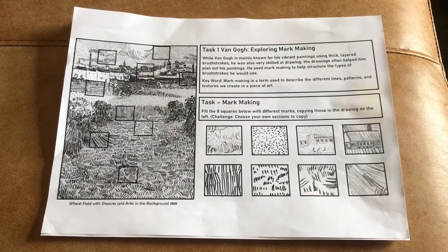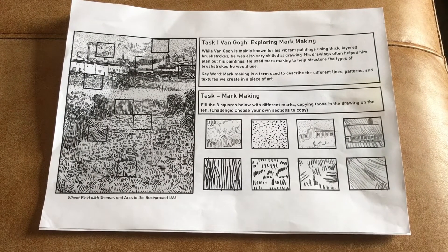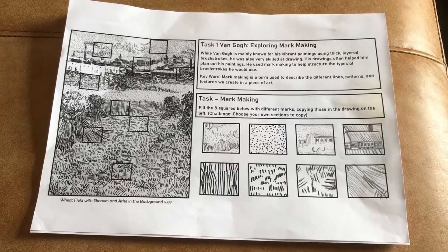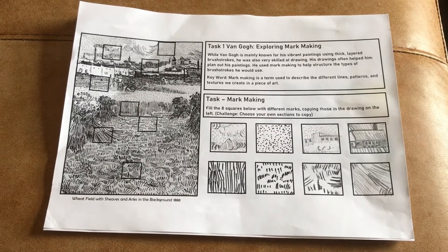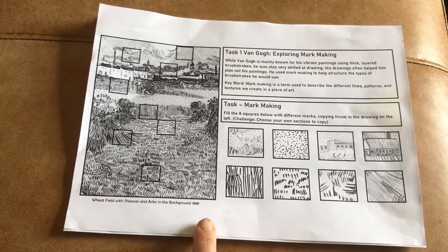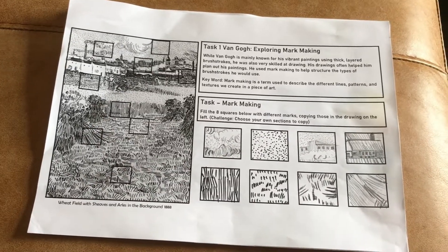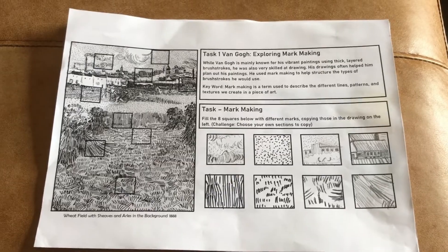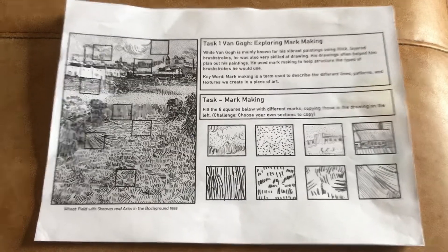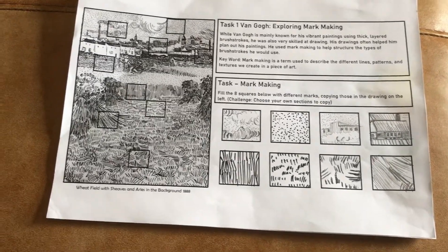So I'm going to set you some mark making tasks this week and I'm going to show you my attempt at the examples now. Task one: I would like you to explore mark making using pencil, a biro, or felt tip, something like that. You can see here that the suggestion is you use these small squares and recreate them in these squares over here. You can choose your own sections if you want to, if you would prefer.